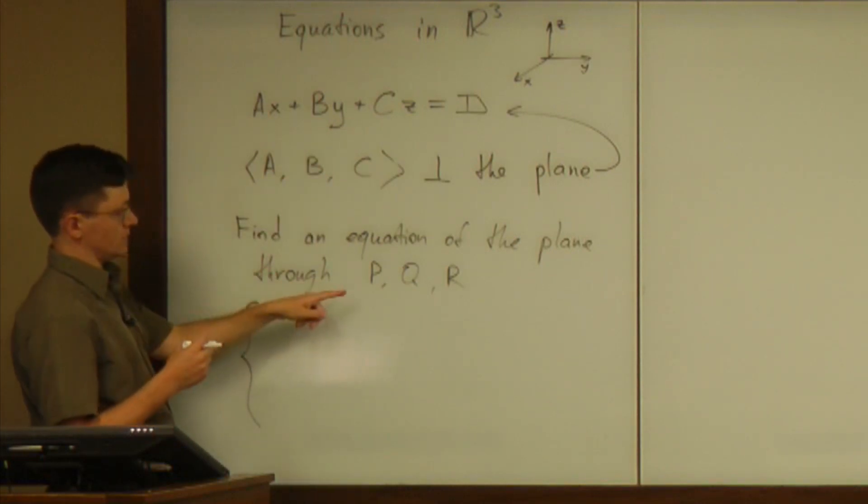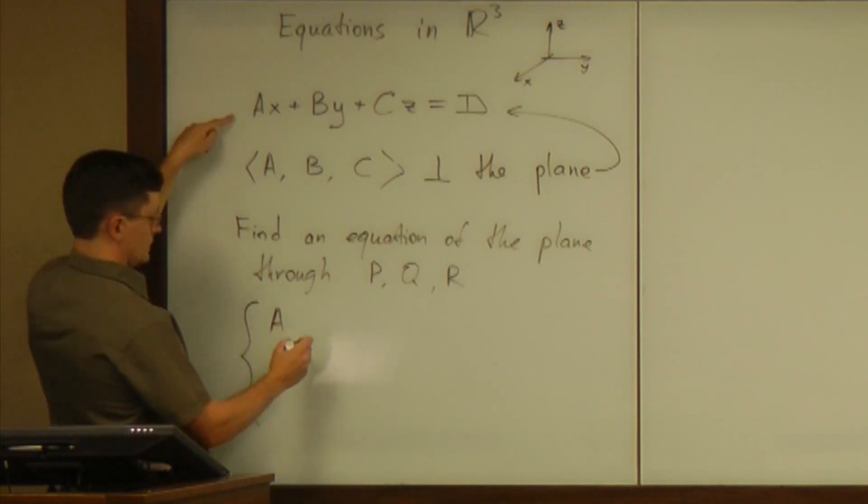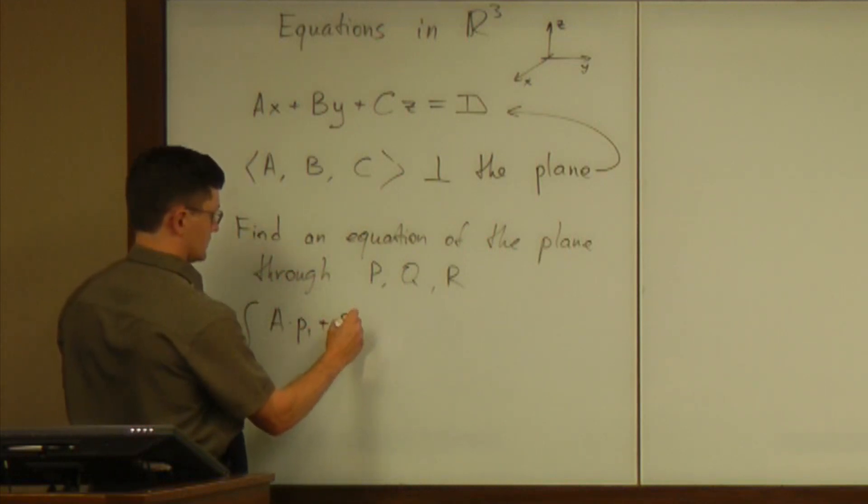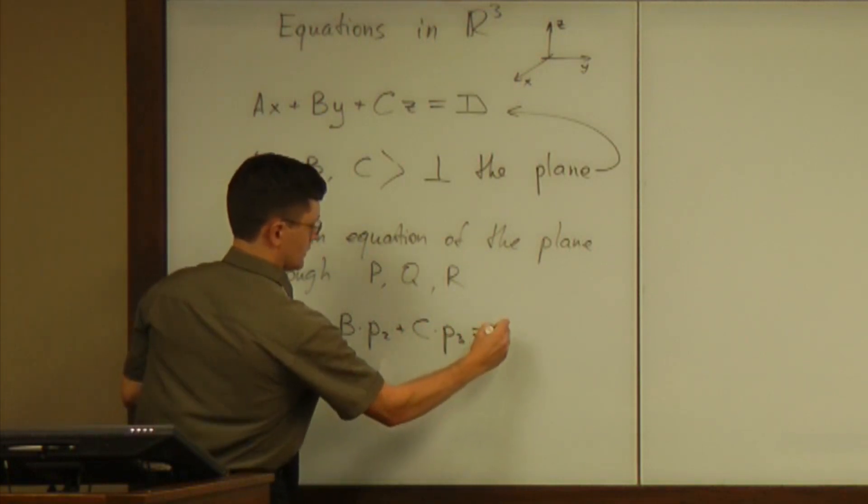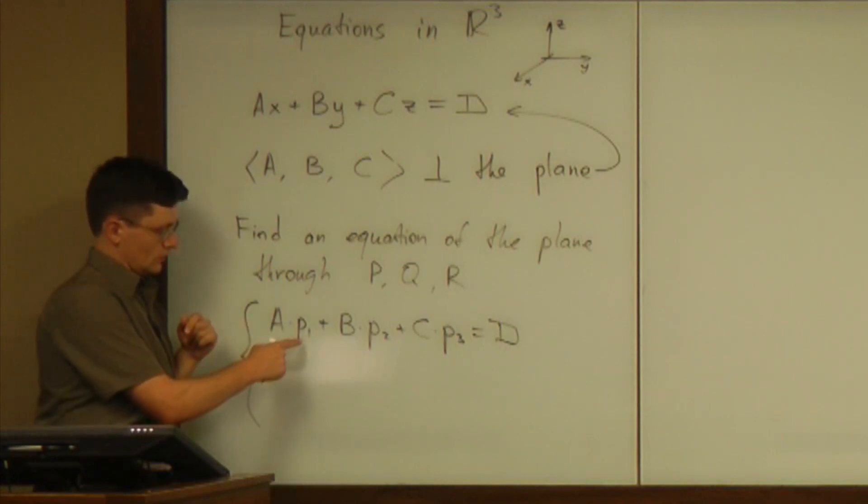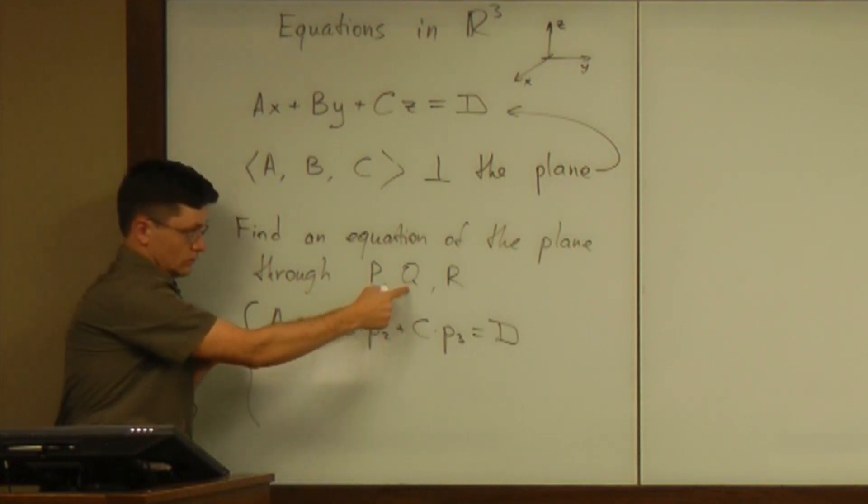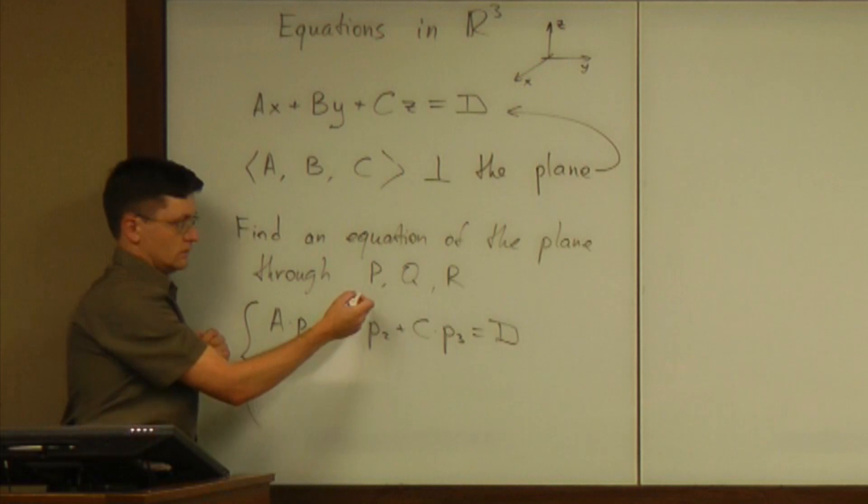All right, so algebraically the fact that P belongs to the plane means that A multiplied by P1, first coordinate of P, plus B multiplied by P2, plus C multiplied by P3, equals D. And then you have Q on that plane, you have R on that plane, you have two more equations.